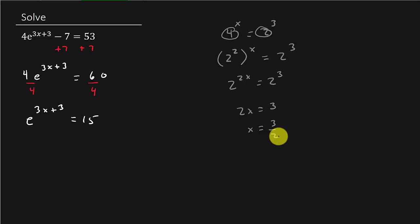So you got a little bonus problem in this video. But that's ultimately what we want to do. But sometimes we can't. And if we can't get like bases, then what we want to do is take the natural log of both sides.